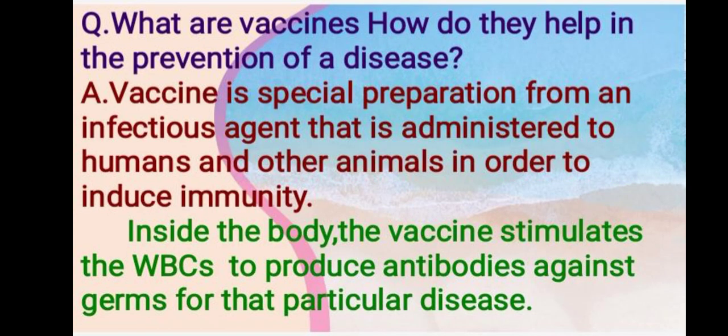Next question: what are vaccines? How do they help in prevention of a disease? A vaccine is a special preparation from an infectious agent that is administered to humans and other animals in order to induce immunity. Inside the body, the vaccine stimulates the white blood cells to produce antibodies against germs for that particular disease.